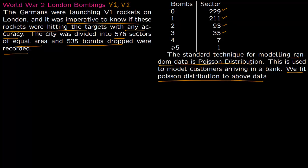This was done by the British statistician R.D. Clark. The idea was if this data follows a Poisson distribution, then we don't have to worry because the rockets are just falling randomly over the city with no accuracy.